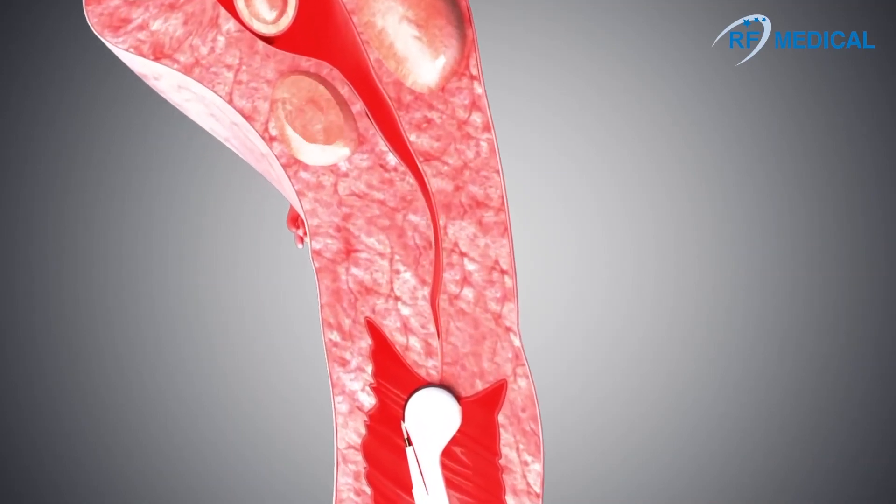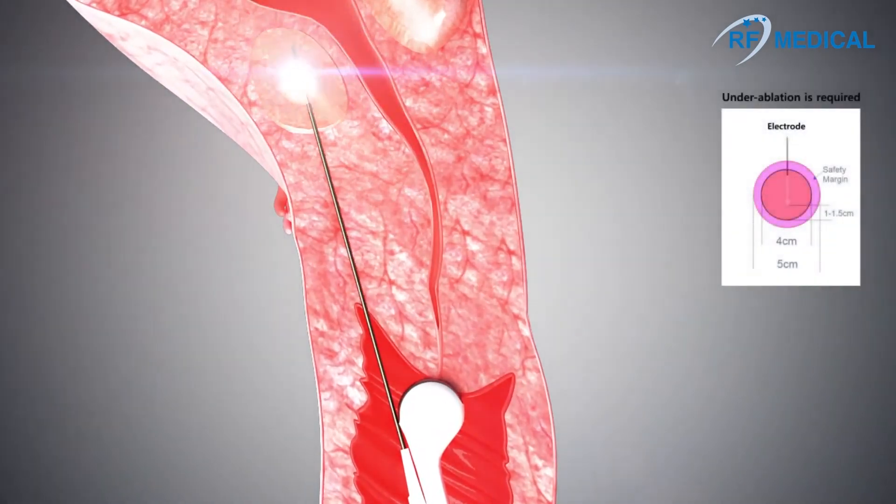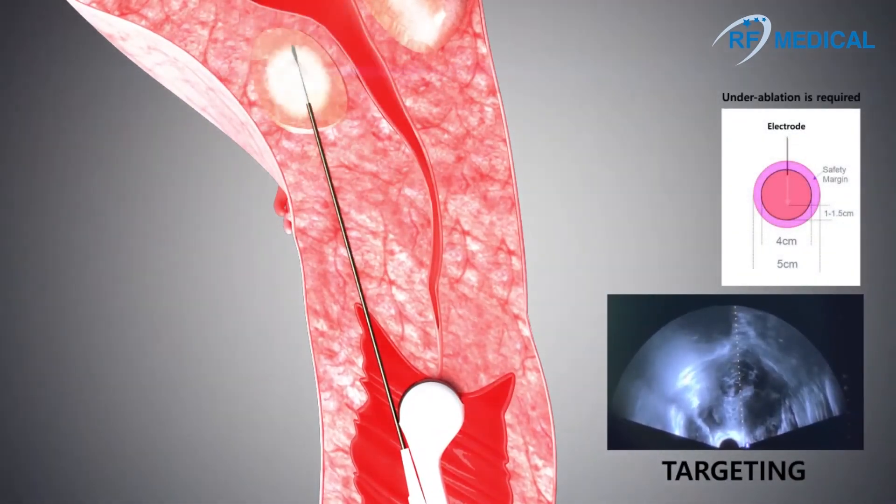After confirming the position of the myoma with the use of ultrasound, insert the electrode in the myoma and position the active tip in the center.